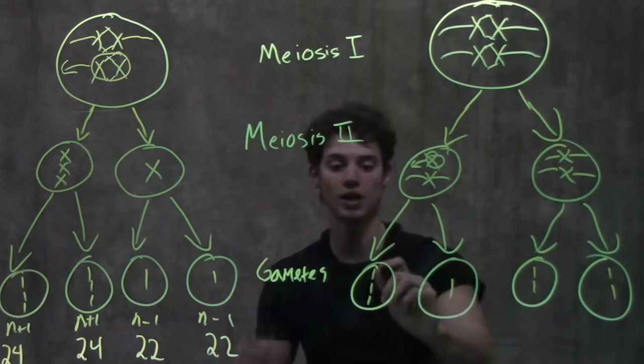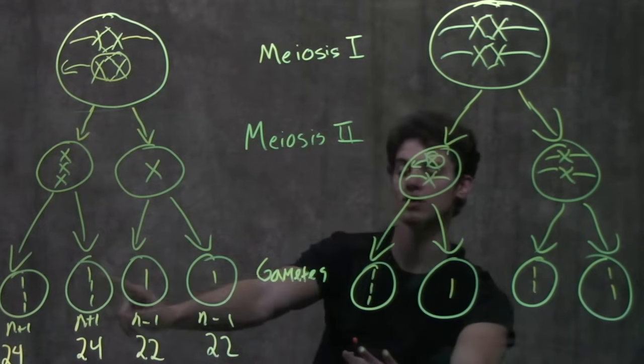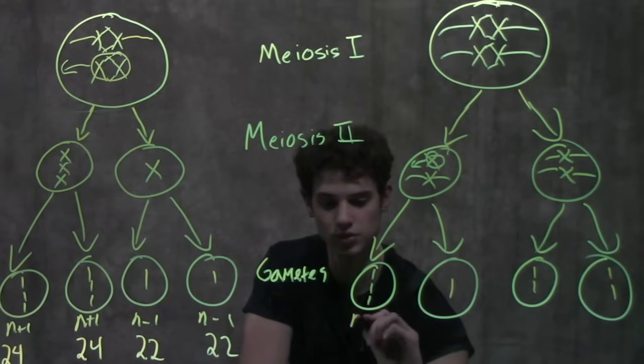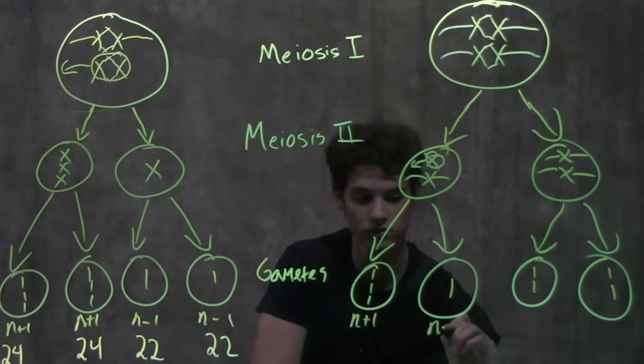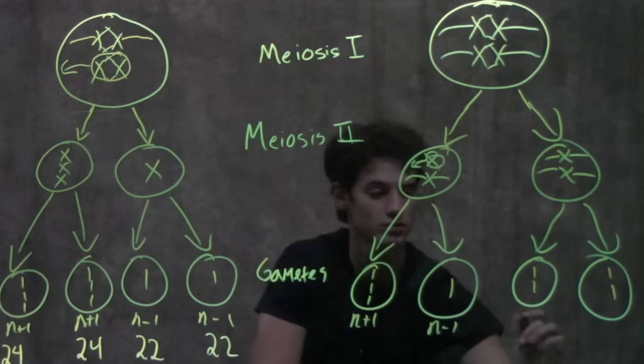What does this mean for the chromosome counts? Well, as we saw with nondisjunction in meiosis I, this is going to be n+1 while this one is n-1, and these are just n—they're normal, they were unaffected.